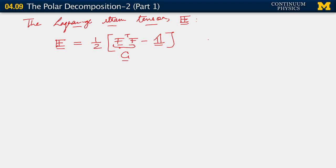The reason I've written it out as F transpose F is that I want to demonstrate that this definition of strain is already fundamentally non-linear in our deformation gradient. You may think about it as being quadratic in the deformation gradient F. This is quadratic in F.